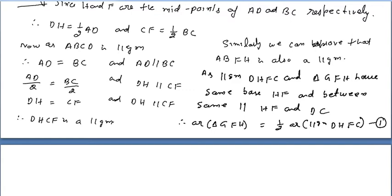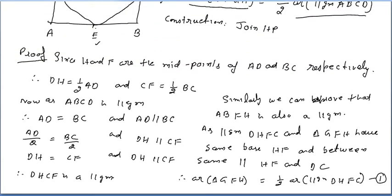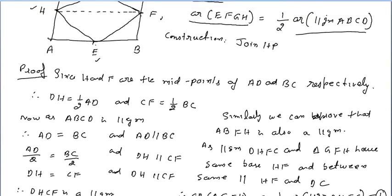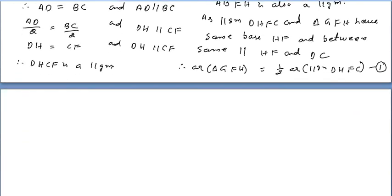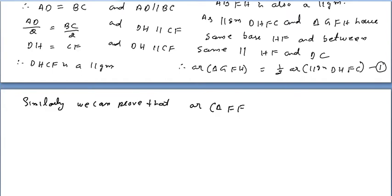Similarly, on the other side, the area of triangle EFH equals half the area of parallelogram ABFH. This is equation number 2.